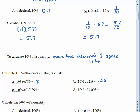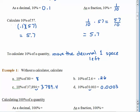Let's see what you did. 10% of 37,894 should be 3,789.4 — just moving that decimal point one space to the left. 10% of 0.003 is 0.0003, again moving that decimal point one space to the left. 10% is super easy to calculate.